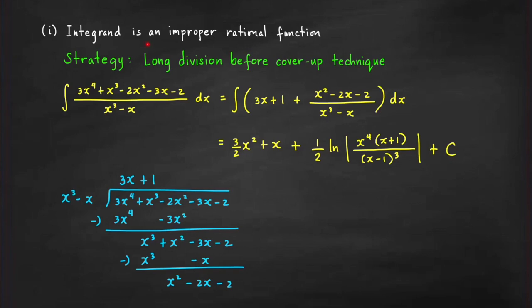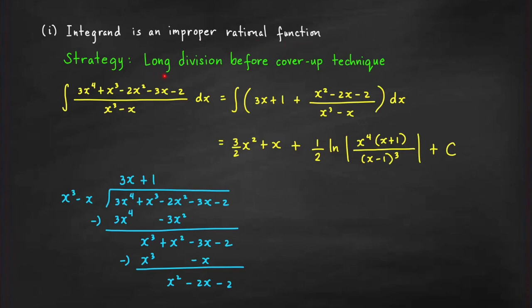What if the integrand is an improper rational function? An improper rational function is one where the degree of the numerator is equal to or greater than the degree of the denominator. You cannot immediately use partial fraction decomposition — that technique only works for proper rational functions. The strategy for improper rational functions is to perform long division first before using the cover-up technique.